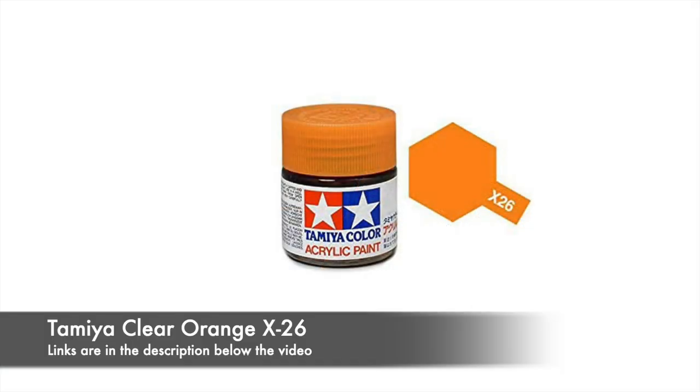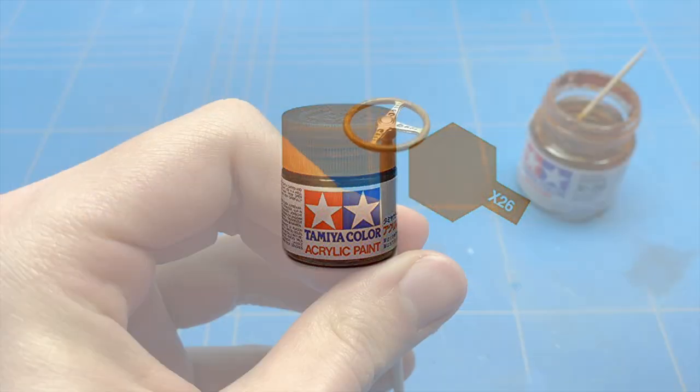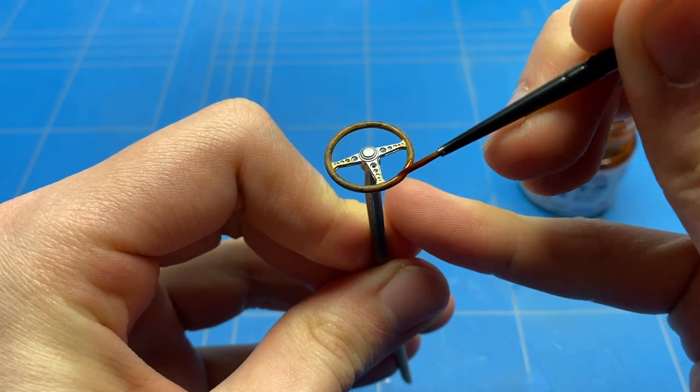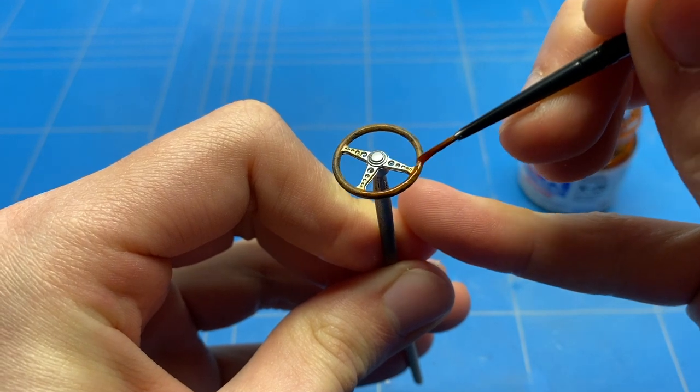The finishing touch still needs to be applied, and that is a really thick coat of Tamiya clear orange. This will blend all the colors together and give it that actual wood grain look.